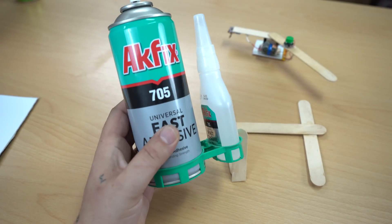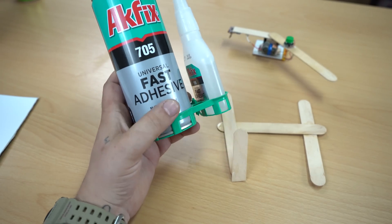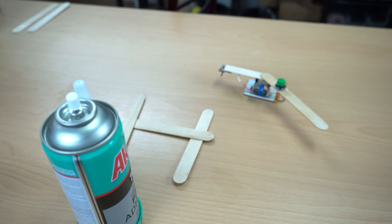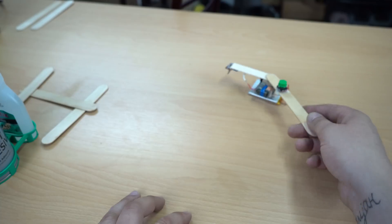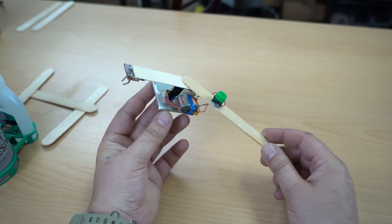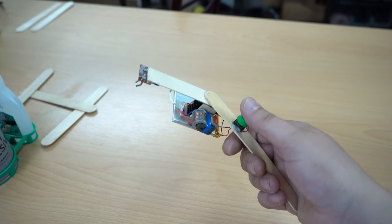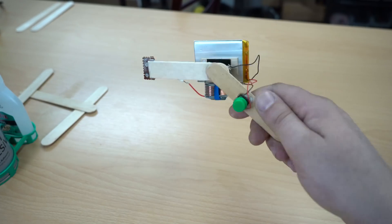Akfix 705 universal fast adhesive, very nice. Let's continue with the project, which is a homemade inverter igniter. This gadget will act like a plasma engraver. Let's try it.